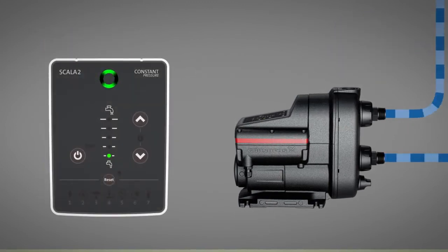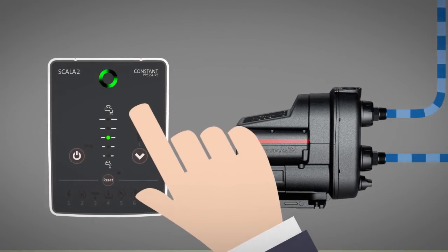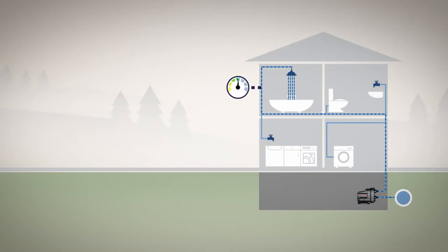For installers, this means that the setup process is quick and easy. Simply set the desired pressure level using the control panel and check the water pressure at the furthest tapping point, preferably a shower, as this is where insufficient pressure will be felt most directly by the homeowner.